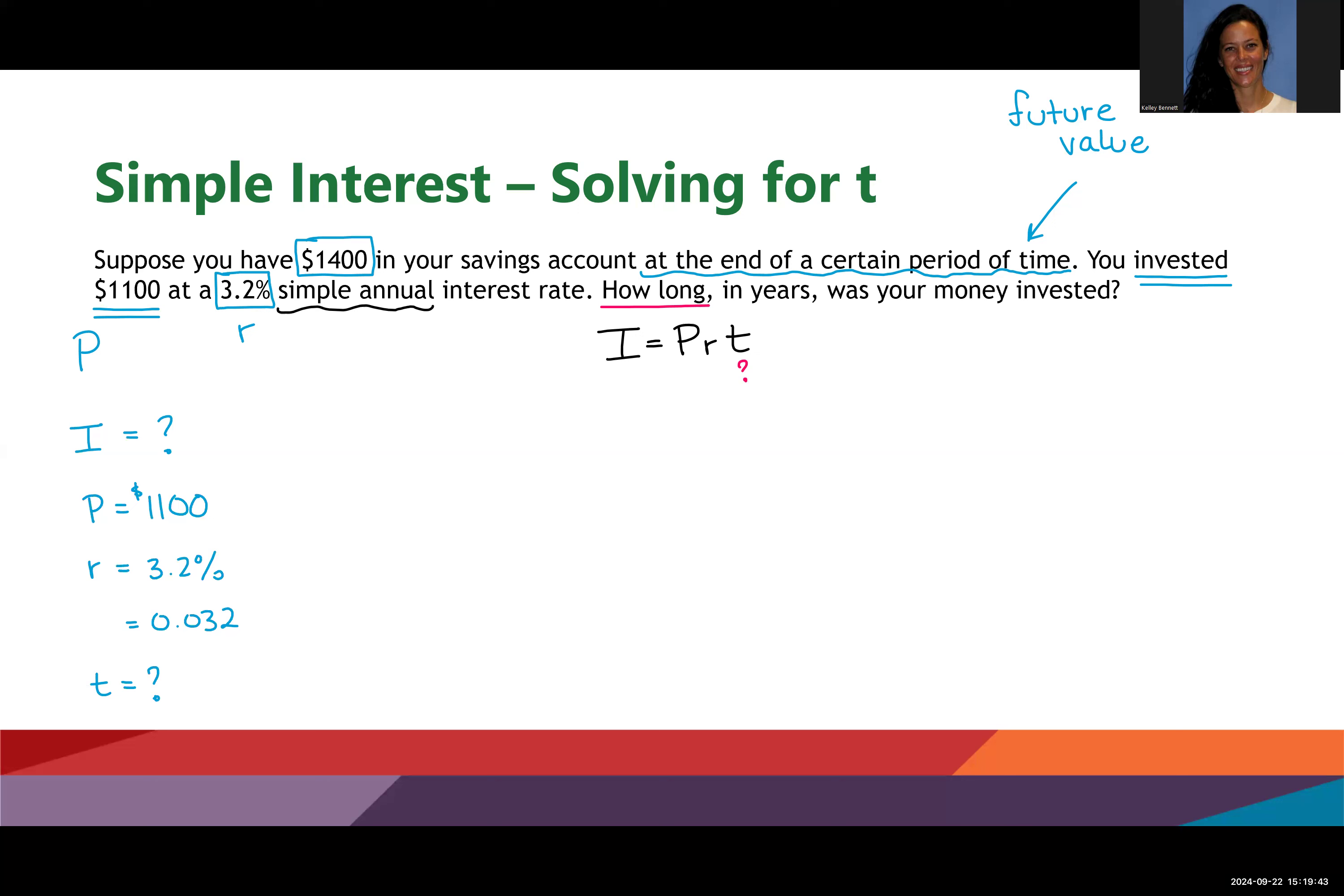Future value is principle plus interest, and we know that the future value was $1,400. Our principle was $1,100, so whatever I add to that is my interest. If I subtract $1,100 from each side, I can see that $300 is the interest. So that's the missing piece I need in order to get this equation solved for T. Now I know that $300 is I, and now I can do what I've been doing the whole time.